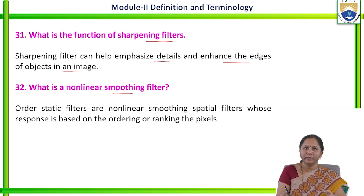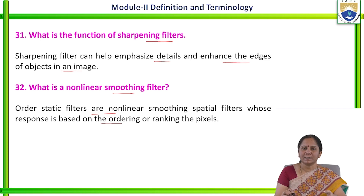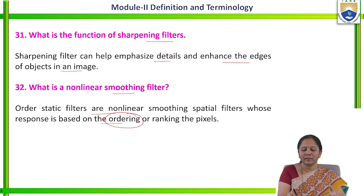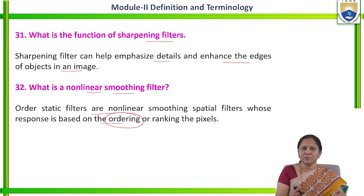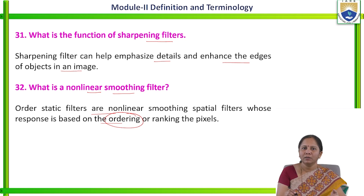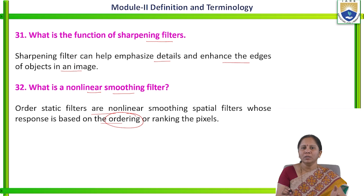What is a non-linear smoothing filter? The order statistic filter — or non-linear smoothing spatial filter — is one whose response is based on ordering or ranking of pixels. We have learned different cases under non-linear: median, min filter, and max filter. In all these cases, the neighborhood pixels are first arranged in ascending order. In the median filter, the middle value is selected; if it is a min filter, the minimum value is selected; if it is a max filter, the maximum value is selected. All selected values are placed as the center pixel value.